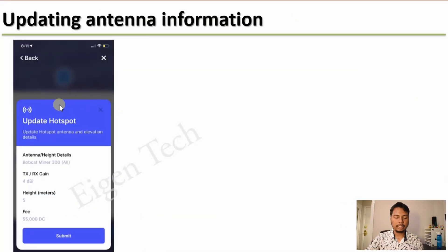So the next question is how to update the antenna information. For that you have to log into your Helium app and click on the gear icon, and then you will find an option to update the hotspot information. So here you have antenna height details. Height could be any number, because in POC V11 height is not going to be used. It's just an indication of how high your antenna is. So the important number is going to be this transmission and receiving gain. To update any of the transmission or receiving gain or height, you have to pay a fee of 55,000 DC, which is equivalent to 55 cents. So the main question is what value should you choose for transmission and receiving gain.